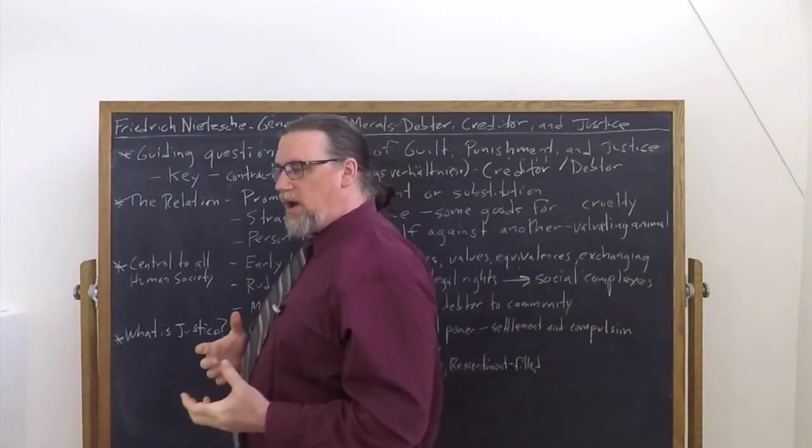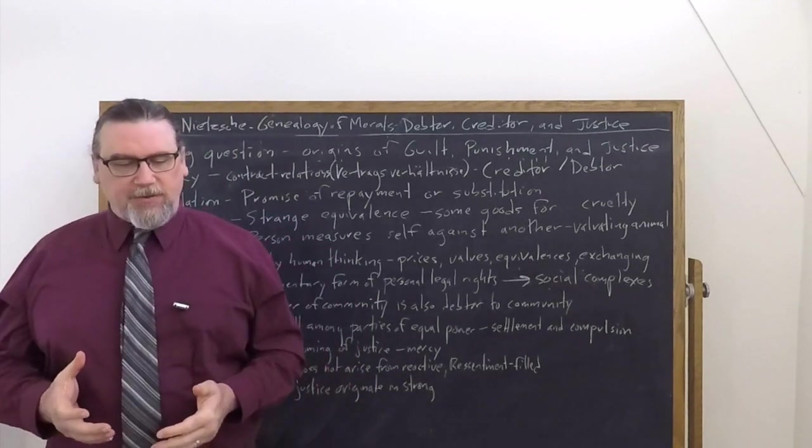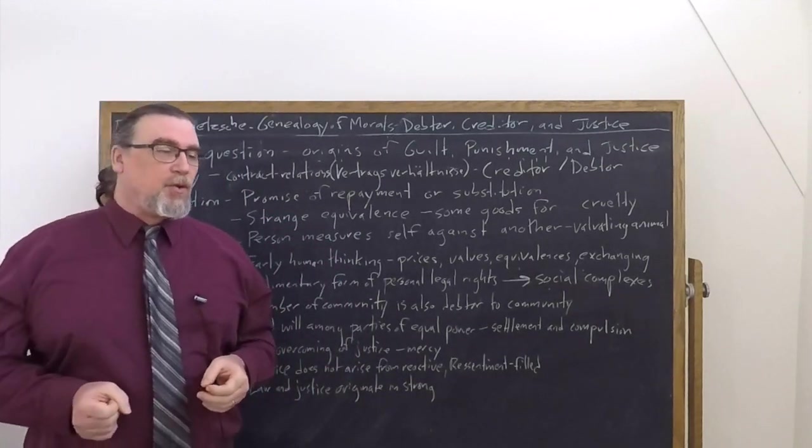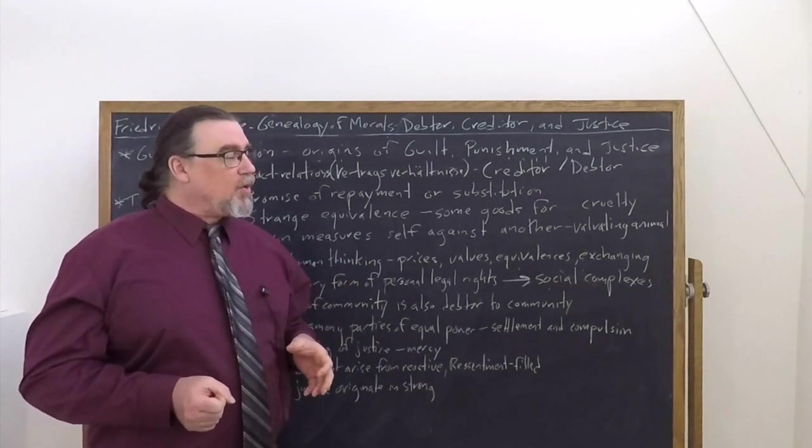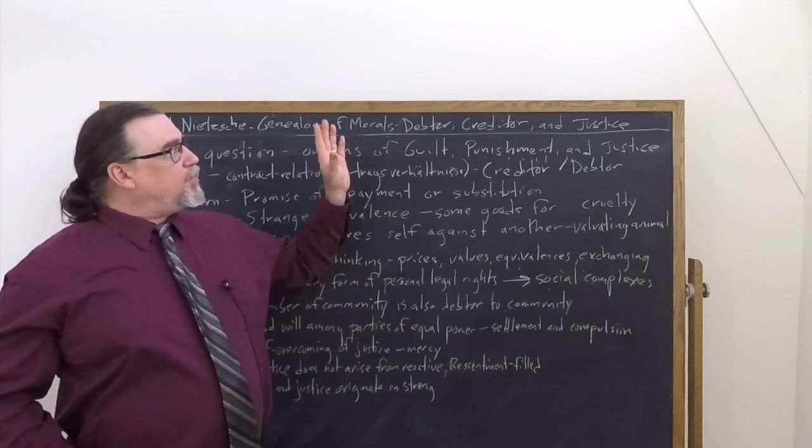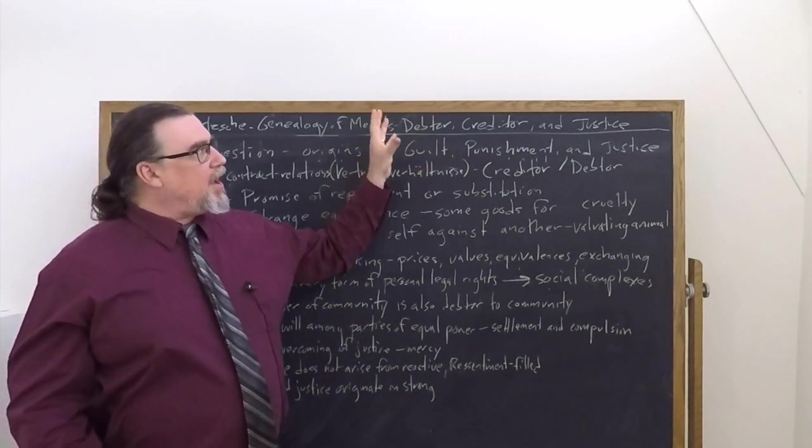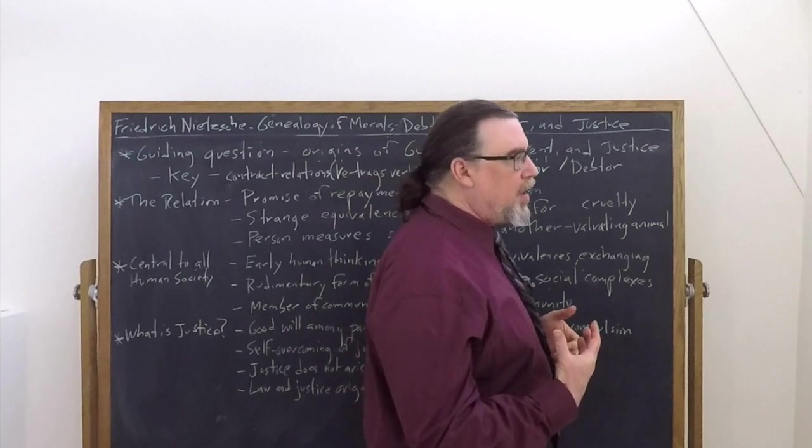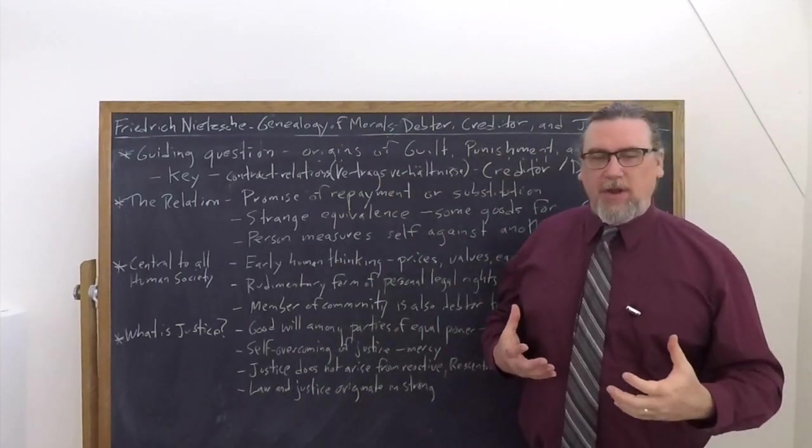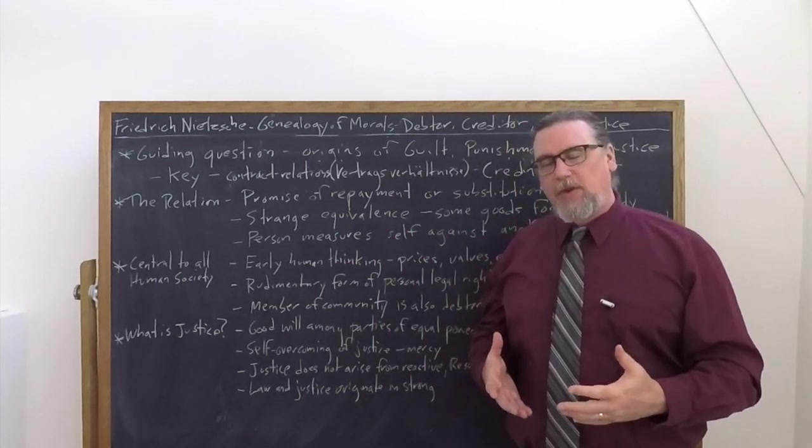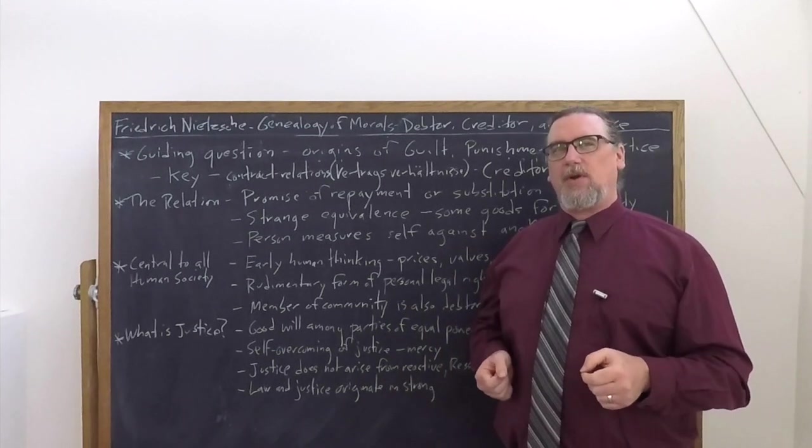One of the central concepts that Friedrich Nietzsche discusses in essay number two of his Genealogy of Morals is this relationship between creditor and debtor and what it has to do with the origins of justice as well as a number of other things.